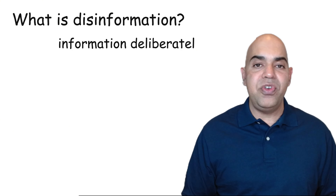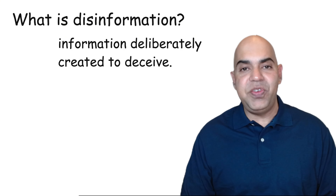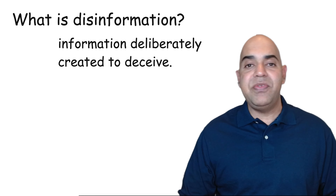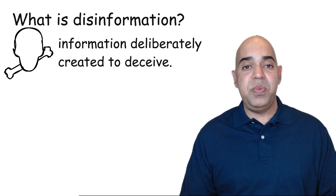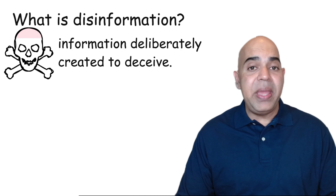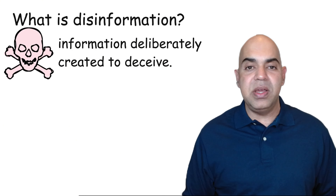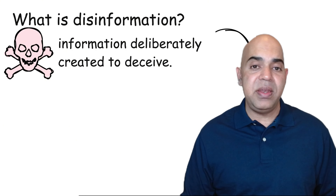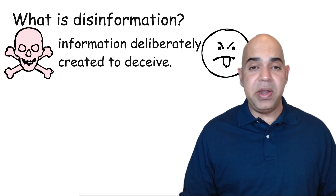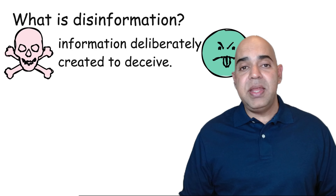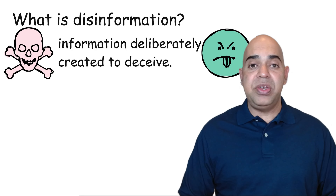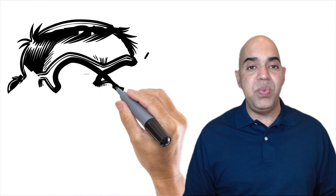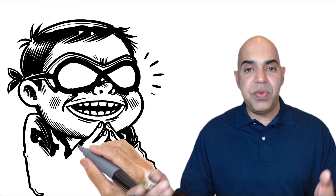Now, what is disinformation? Disinformation is false information that is deliberately created and spread to deceive or mislead. In elections, disinformation is often used to manipulate public opinion, suppress voter turnout, and damage the reputation of candidates. Disinformation need not come from a party — a supporter of a candidate can create disinformation to damage the reputation of the other candidate.